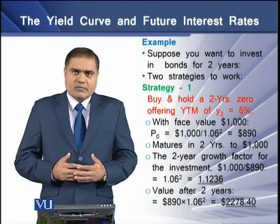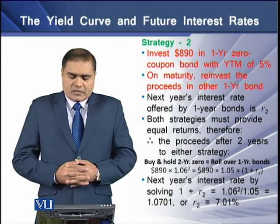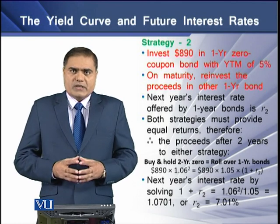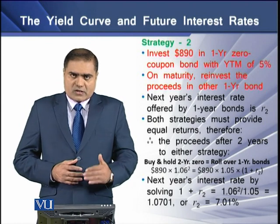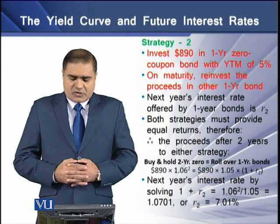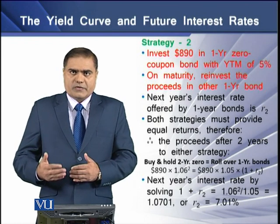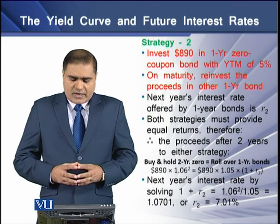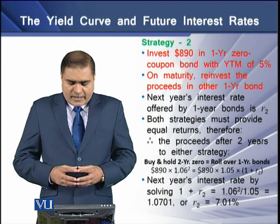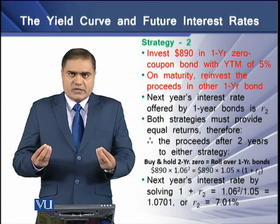The value at two years, if we multiply P0 by 1.06 squared, comes to approximately $1,124. Strategy two is to invest $890 in a one-year zero coupon bond with a YTM of 5%, and on maturity, reinvest the proceeds into another one-year bond — this is the rollover strategy. The next year's interest rate offered by the one-year bond is called R2, the short rate for year two. Both strategies must provide equal returns, so the proceeds after two years from either strategy should be equal.